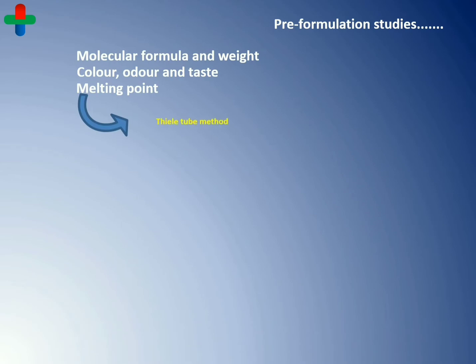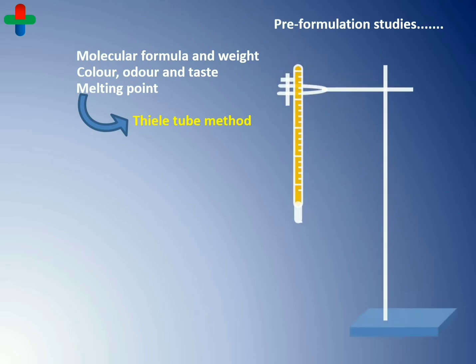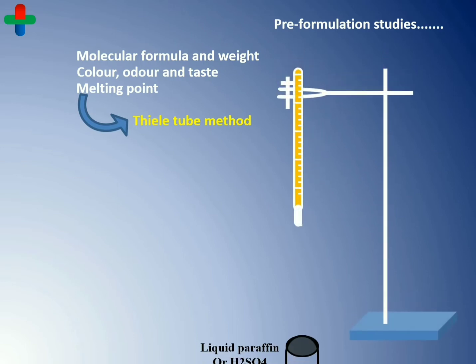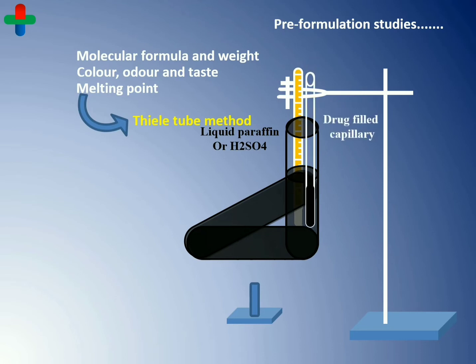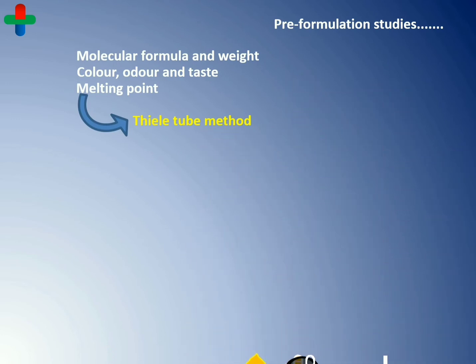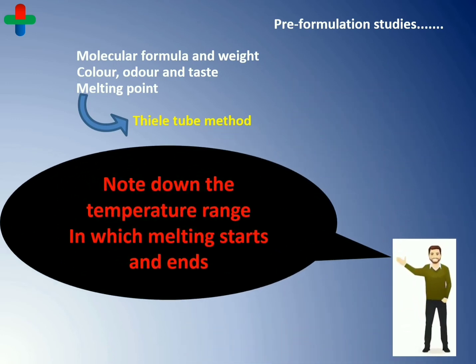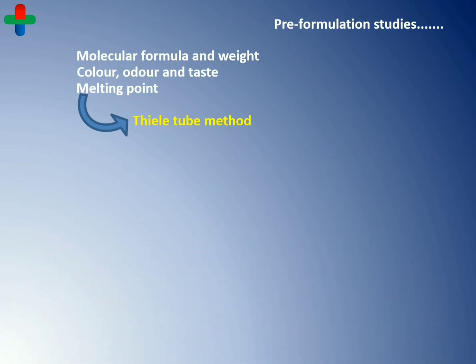The same procedure can be used for the determination of melting point by the Thaler tube method. The liquid paraffin or sulfuric acid filled triangular-shaped Thaler tube is fixed over the flame with a thermometer. Further, the drug-loaded closed capillary is fixed into the Thaler tube. We can now wait for the rise of temperature up to the melting point of the drug, and when the drug starts melting, note down the temperature range in which melting starts and ends. This is how the melting point of the drug is determined.